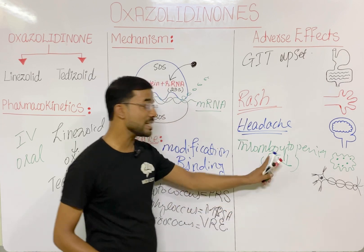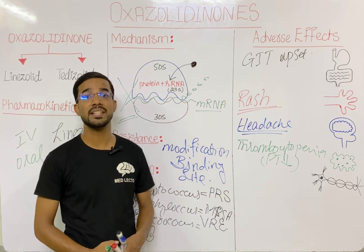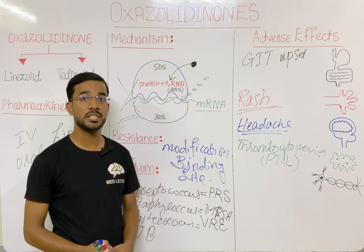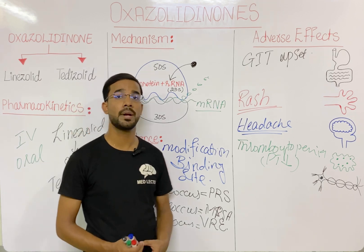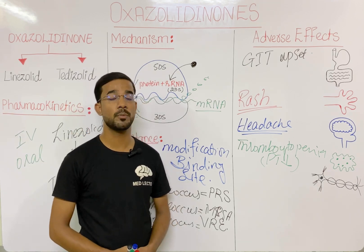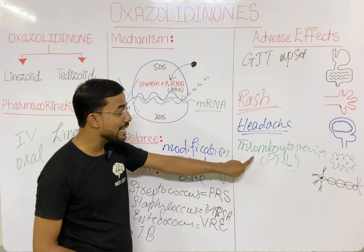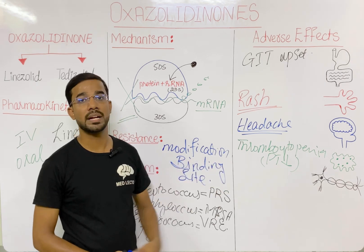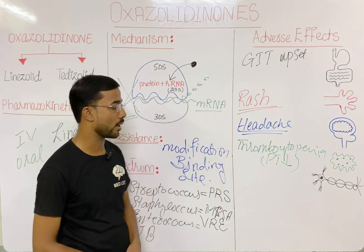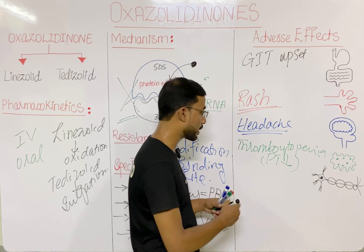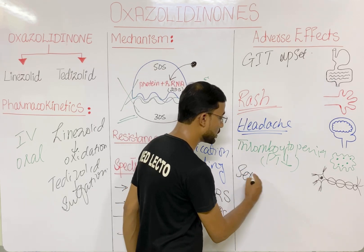Thrombocytopenia, or low platelet count, can be detected in a CBC (complete blood count) report, which shows all blood counts including RBCs, WBCs, and platelets. A low platelet count will be easily visible in the CBC report.